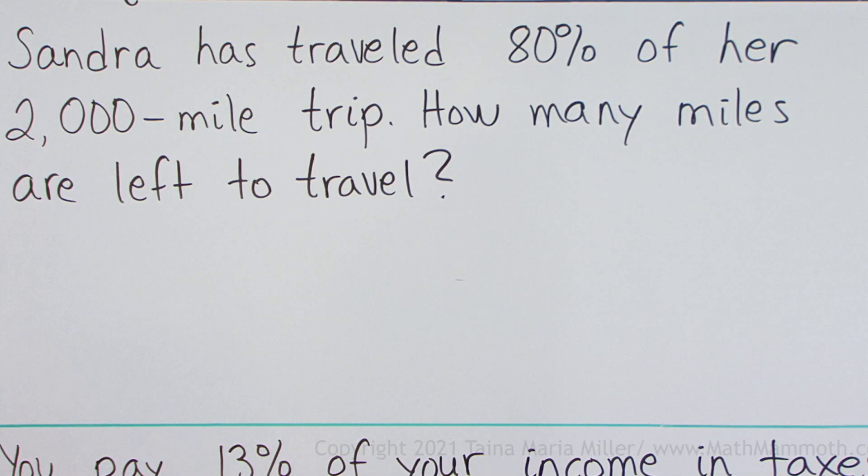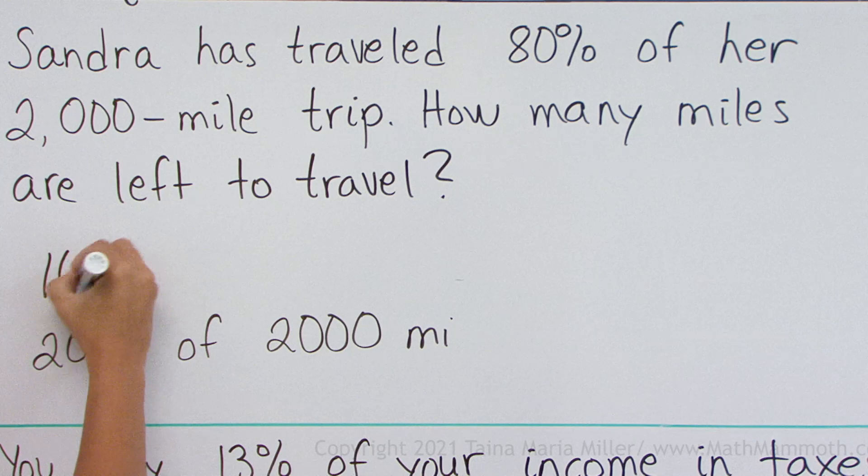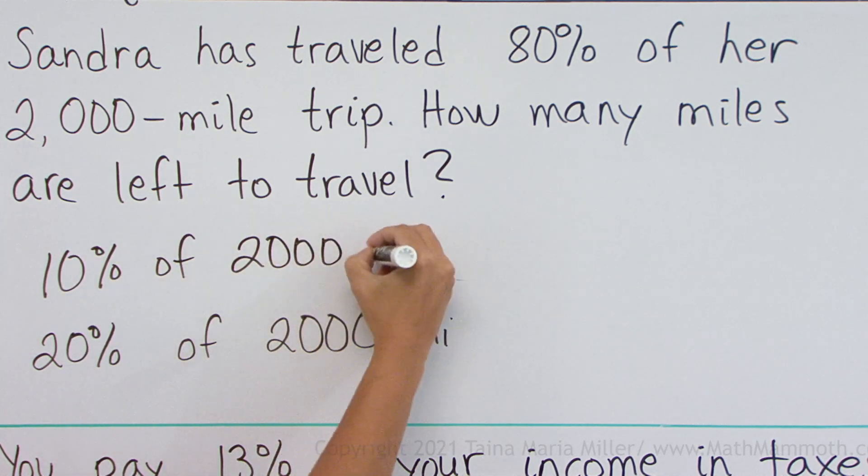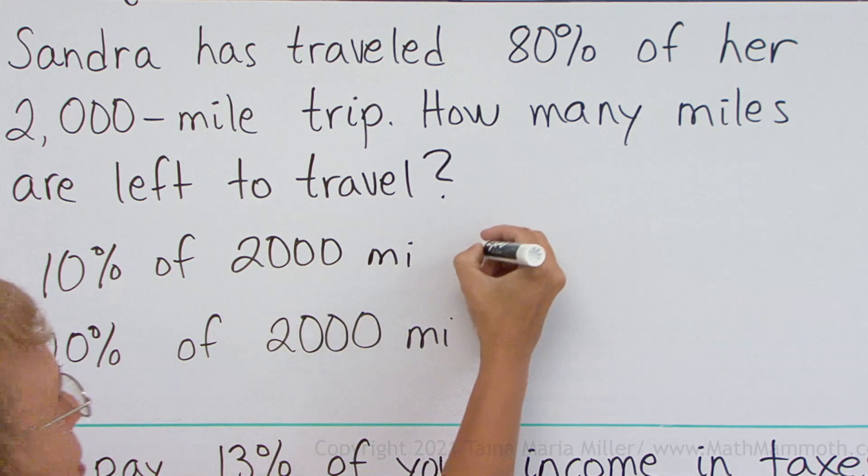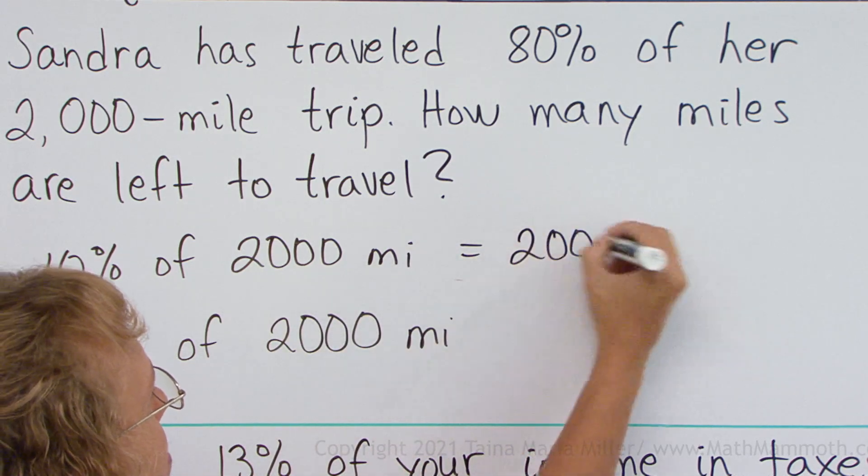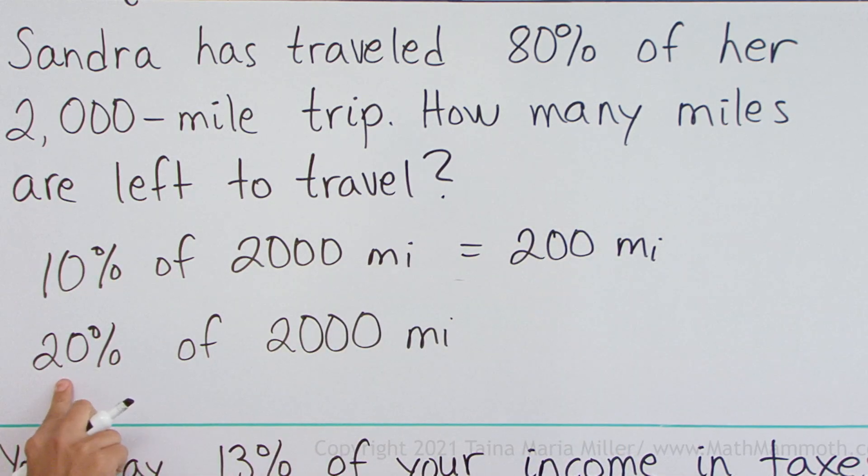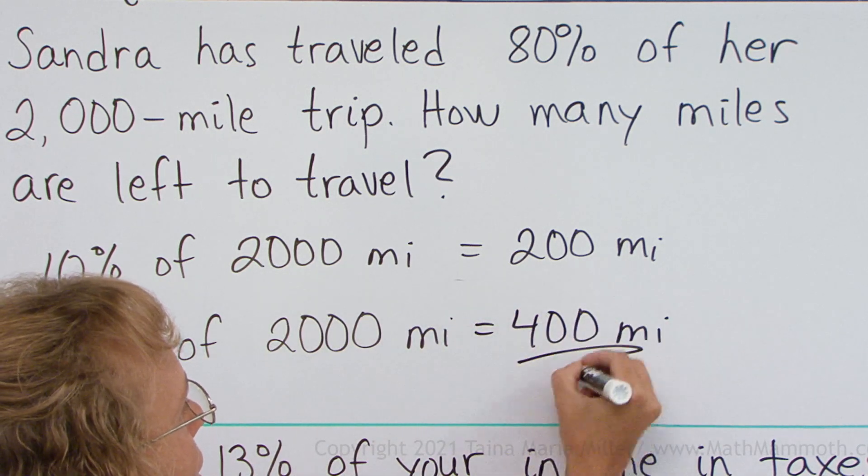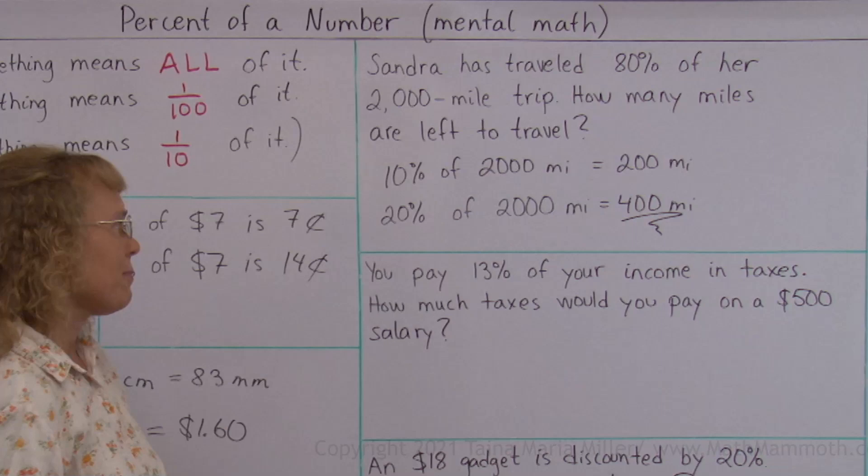Twenty percent of that whole trip is left to travel. And how many miles is that? The whole trip is two thousand miles. So we need to find twenty percent of two thousand miles. To find that, I will first find ten percent. Ten percent of two thousand miles would be one tenth of that. That's two hundred miles. And then twenty percent is easy. It's doubled that. It's four hundred miles.